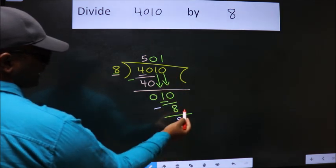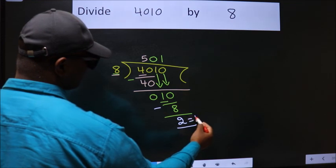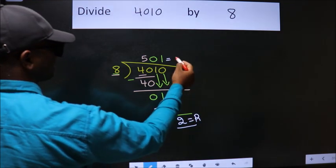No more numbers to bring it down, so we stop here. This is our remainder. This is our quotient.